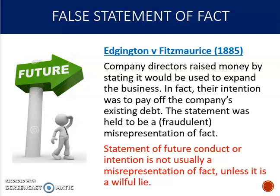The first requirement for proving misrepresentation is a false statement of fact. A misrepresentation as to future intention is usually not actionable for misrepresentation because it's not going to be a statement of fact. That's illustrated in the case of Edgington v Fitzmaurice. The facts were that company directors were raising money by stating they were going to use the money from investors to expand the business. In actual fact, their real intention was to use the money to pay off company debts, so their statement was a fraudulent misrepresentation of fact.